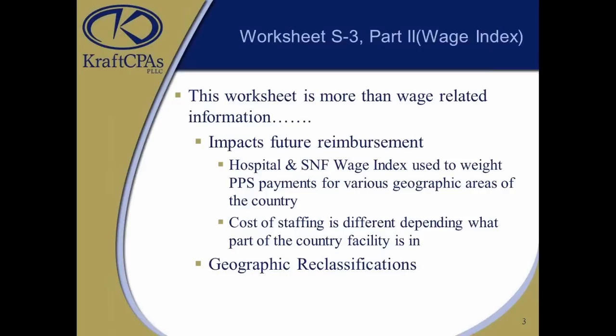Another important area the wage index is used for is geographic reclassifications. This is where a hospital in a rural area gets a state rural rate — typically quite a bit lower than an urban CBSA payment rate — because the cost of staffing is assumed to be less in rural areas. However, certain things can be done to have a rural hospital geographically reclassified into an urban area, getting a higher payment rate, which can be worth millions of dollars a year.